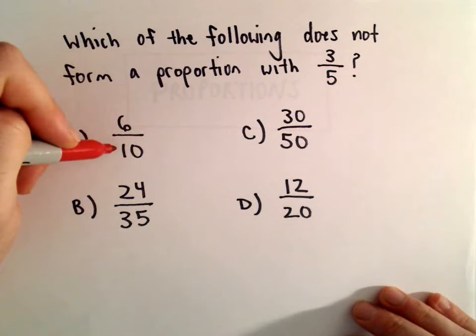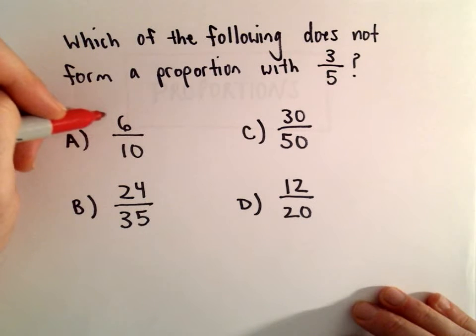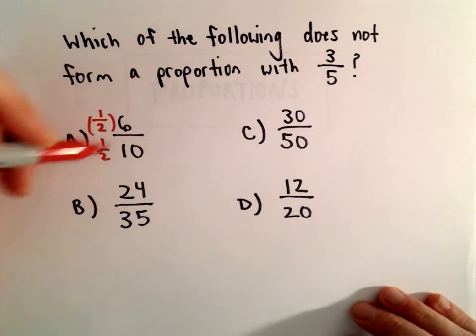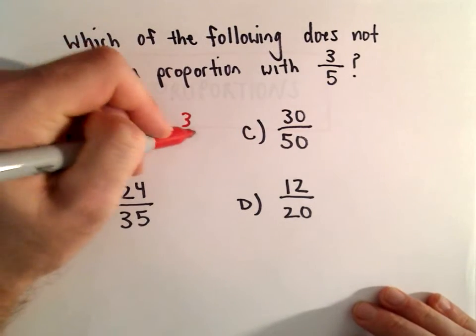So 6 over 10, well, if we multiply the numerator by 1 half and the denominator also by 1 half, we would get 3 over 5. So certainly part A does check out.